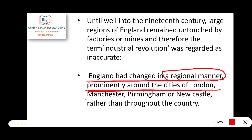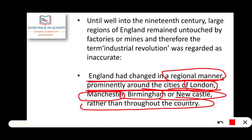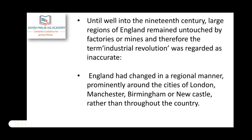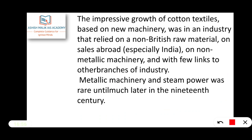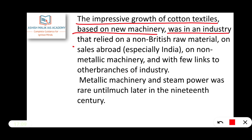England had changed in a regional manner, prominently around the cities of London, Manchester, Birmingham, and Newcastle rather than throughout the country. These were the places where the Industrial Revolution was most impactful. The impressive growth of cotton textiles, based on new machinery, was in an industry that relied on a non-British raw material.